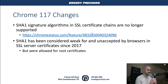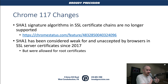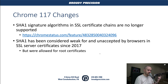Chrome 117 made a change security-wise that deprecated SHA-1 signature algorithms in SSL certificates. There's a link here to the feature definition and explanation and all the technical jargon from the Chrome developers about this change. SHA-1 basically was an encryption or hashing algorithm that has been considered weak and unaccepted by browsers for a long time. You haven't been able to use it in server certificates since 2017, but it was allowed in root certificates, and this change removes that exception.